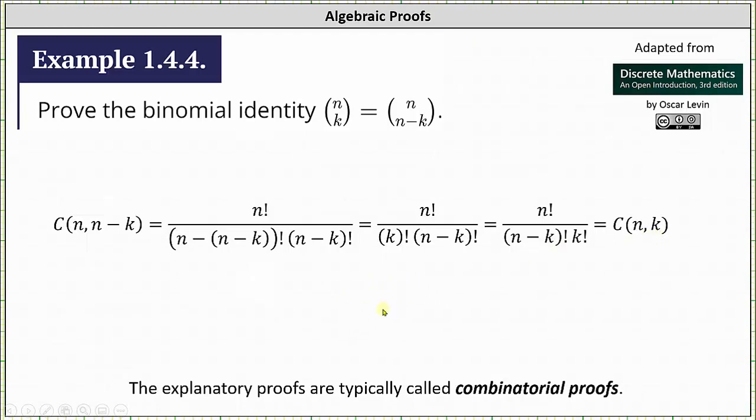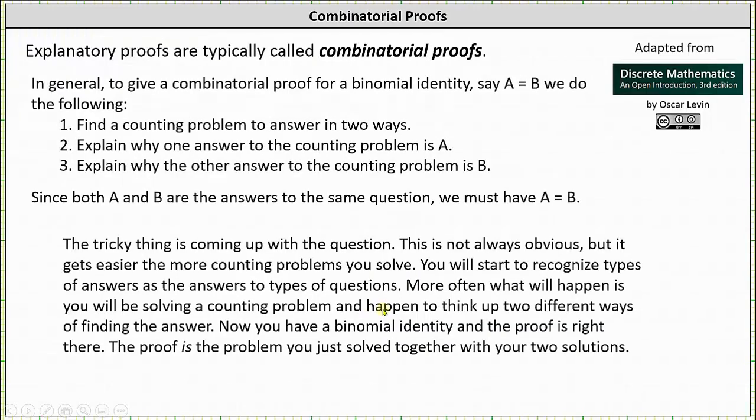And now let's look at three possible combinatorial proofs. Explanatory proofs are typically called combinatorial proofs.